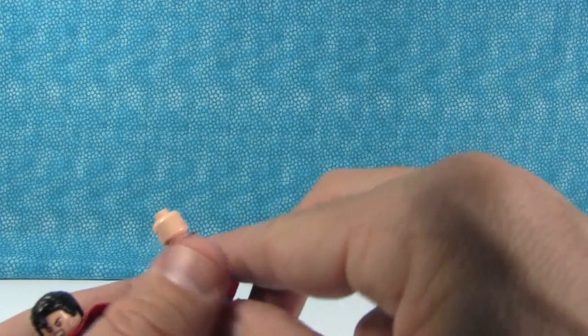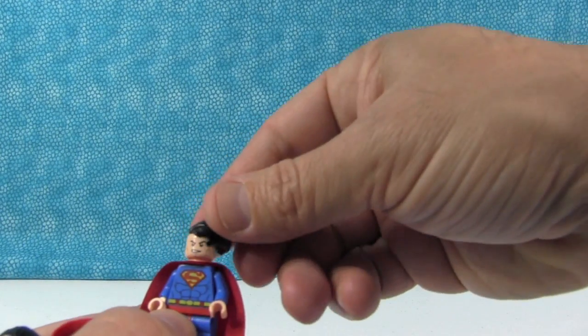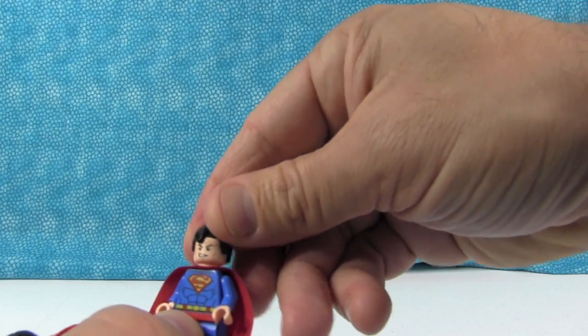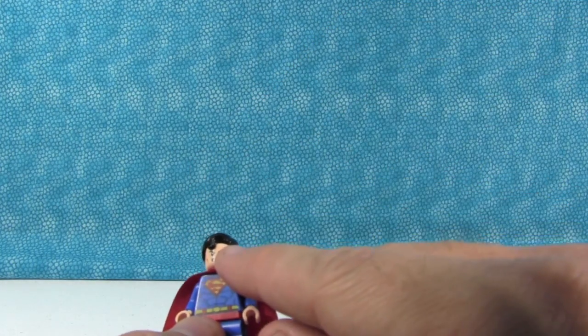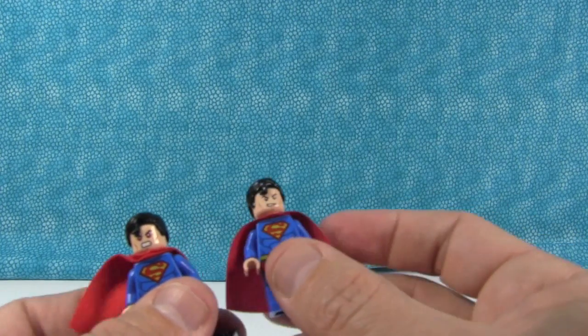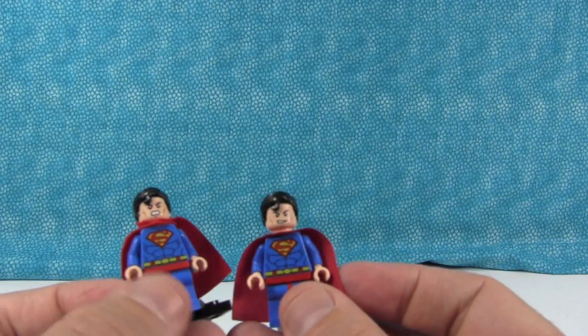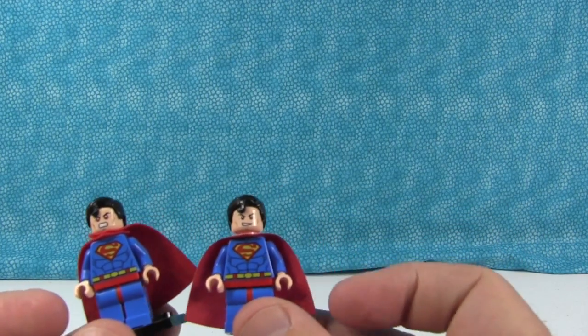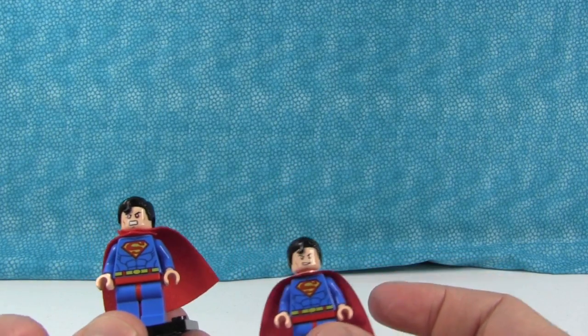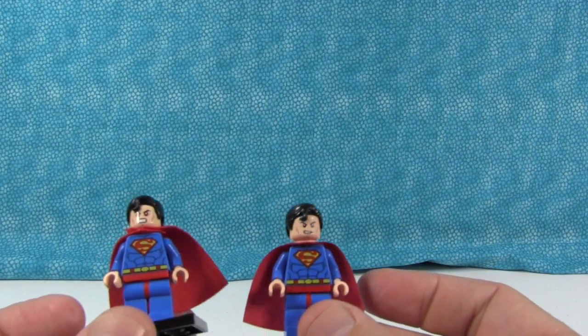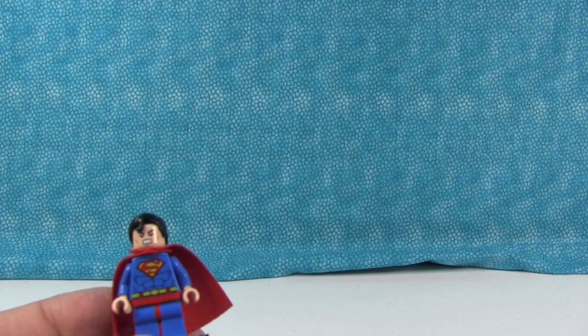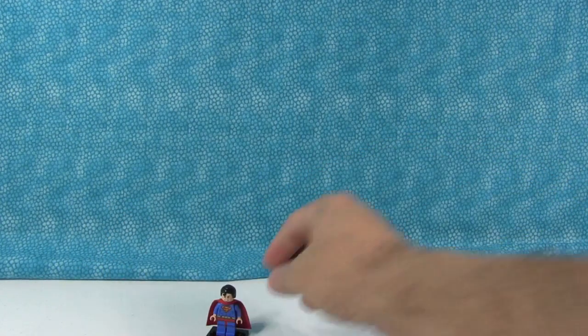And I think he has that grim determination look too. Yeah, that's the same. So the difference between this Superman and the other one are going to be the older style Superman is going to have this face instead of this face. And the cloth cape is different. So, little differences, but still a different minifigure. You know, it just depends what look you want for your Superman. Or if you're a completist, you're going to need both. So that's the Superman from that set.